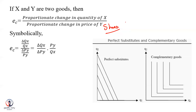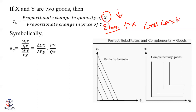For complementary goods — famous examples include bread and butter, shoes and socks, cricket bat and cricket ball. For complementary goods, the cross-elasticity of demand shows a negative relationship.